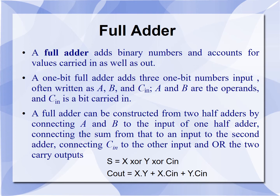A full adder adds binary numbers and accounts for values carried in as well as carried out. A 1-bit full adder adds three 1-bit numbers, often written as A, B, and C-in. A and B are the operands and C-in is a bit carried into it from the previous adder. A full adder can be constructed from two half adders. The sum S = A XOR B XOR C-in, and carry output = A·B + A·C-in + B·C-in.